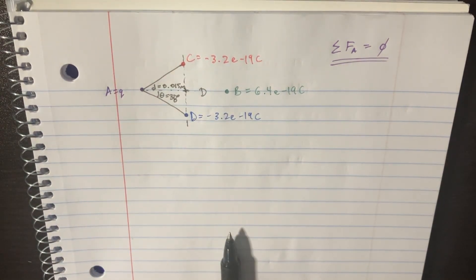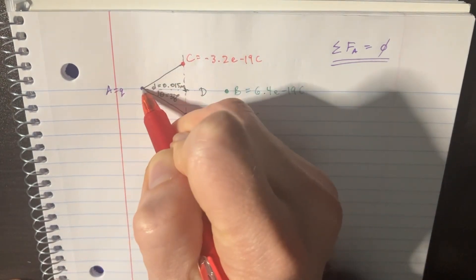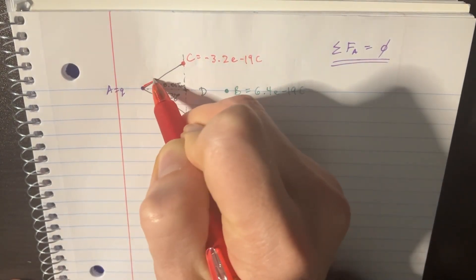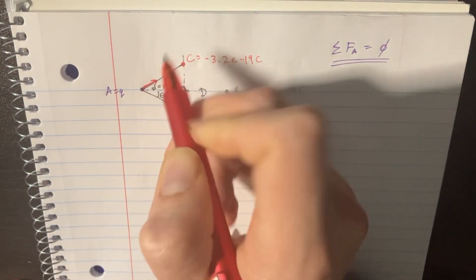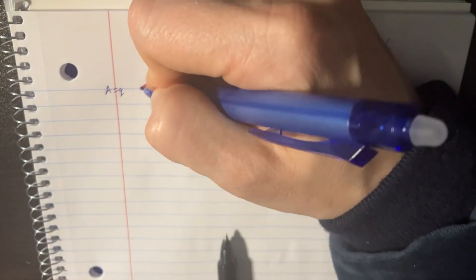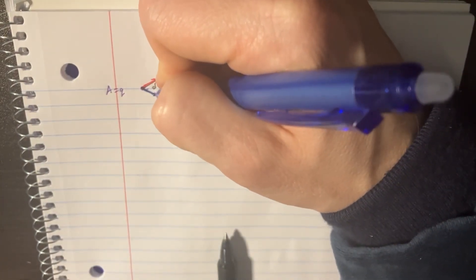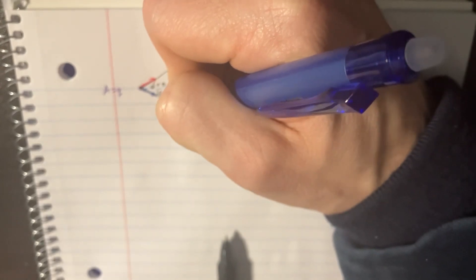And so we have to figure out what are all the forces that are working on A, and we're going to assume that these ones are attractive forces in this direction, in this direction. All right, I'll even put them here just for fun.